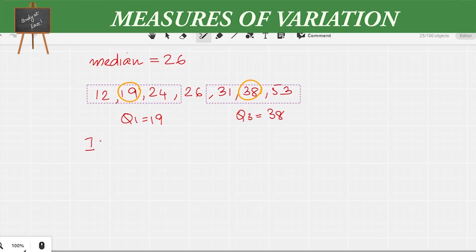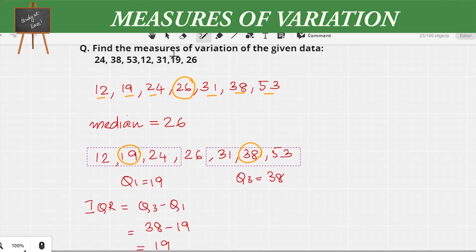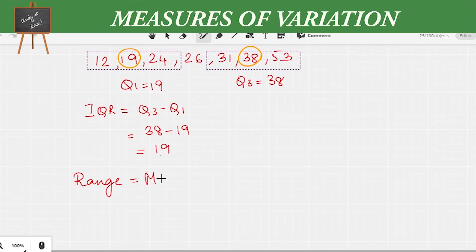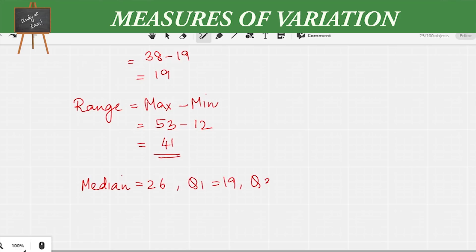Now let us find the interquartile range, the IQR. IQR equals Q3 minus Q1, which is 38 minus 19, which equals 19. To find the range, the greatest value is 53 and the least value is 12, so range is 53 minus 12, which equals 41. In summary: median is 26, Q1 is 19, Q3 is 38, IQR is 19, and the range is 41.